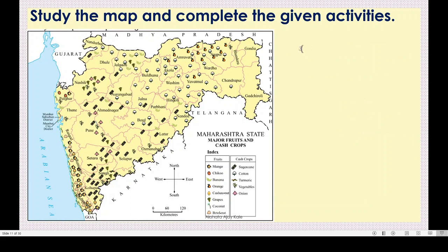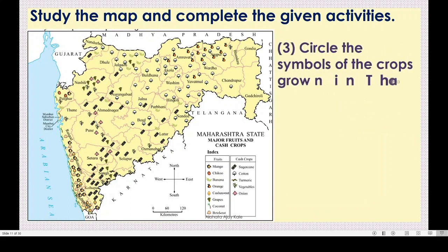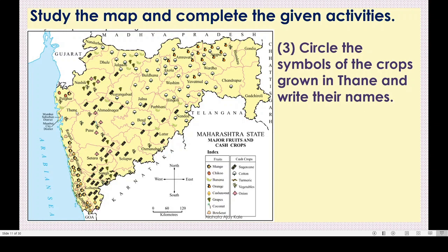Question 3: Circle the symbols of crops grown in Thane and write their names. Thane is here on the map. But we cannot see any symbols of fruits or cash crops in Thane. So, nothing from this list is grown in Thane.